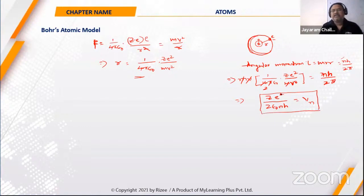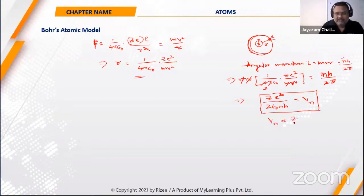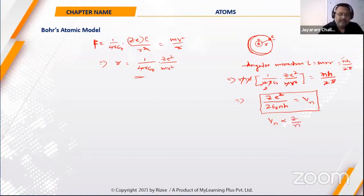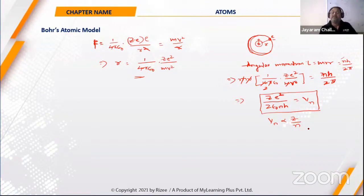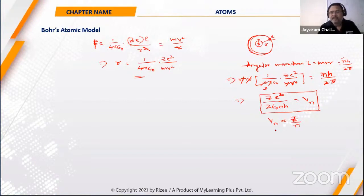The most important thing to remember is how velocity is related to Z and N. Velocity is directly proportional to Z and inversely proportional to N. These are very important questions asked in every examination — for example, if an electron moves from the first orbit to the second orbit in hydrogen or hydrogen-like atoms, how does the velocity change?